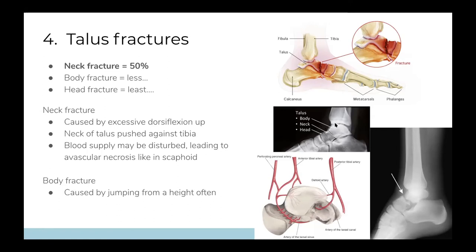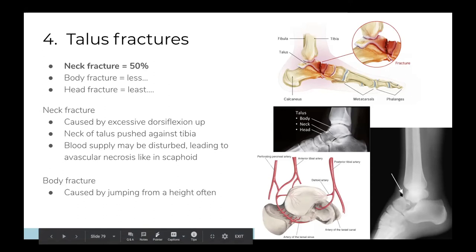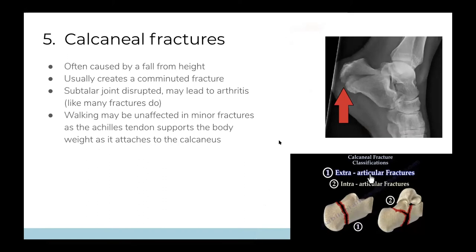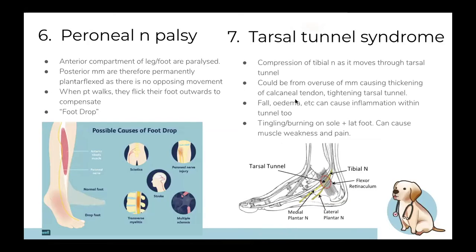Calcaneal fractures are also usually caused by falls from height and tend to become comminuted — breaking into many pieces. Peroneal palsy causes foot drop, where the anterior compartment of the foot is paralyzed. The anterior compartment is responsible for dorsiflexion — pointing toes to the sky. With these muscles damaged, the posterior muscles dominate and there's no force at the front to counteract, so the foot is always plantar flexed.